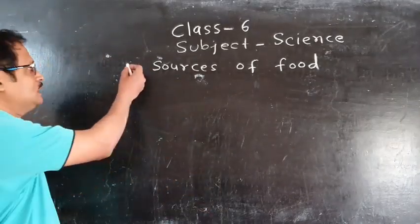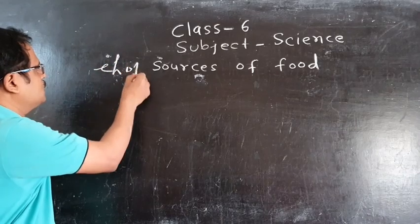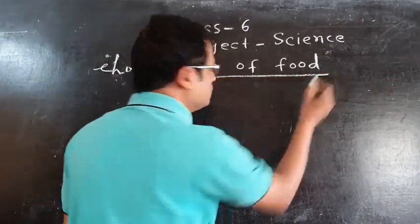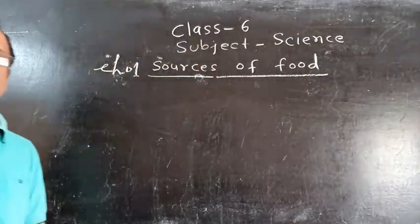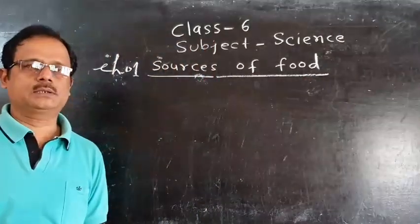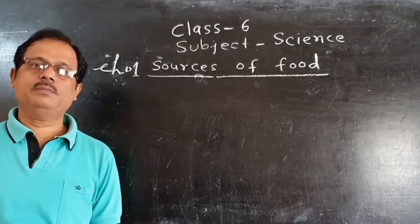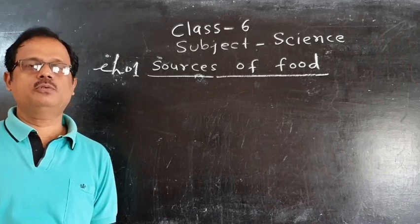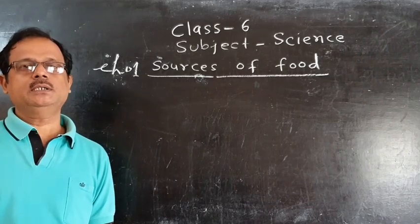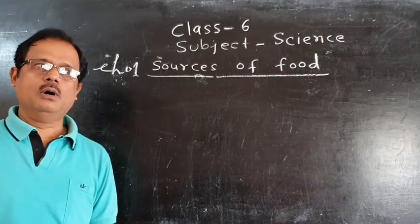This is the first chapter, Chapter 1. The Sources of Food. In this chapter, we will study about different types of food ingredients. Foods are the most important part of every living being. Without food, nobody can survive.